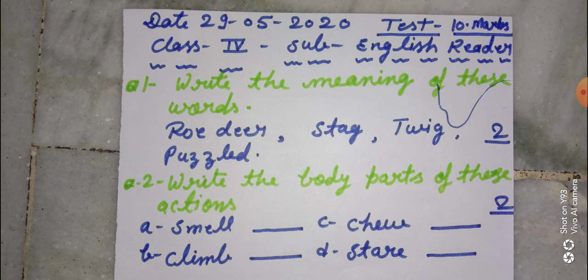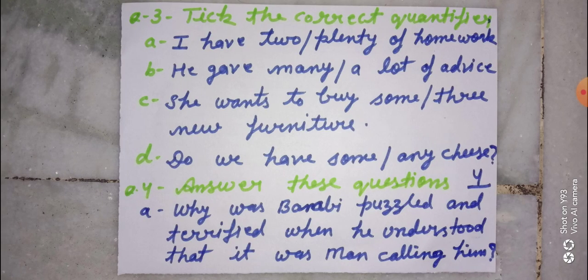Question number three: Tick the correct quantifier. Is mein aapko correct answer pe tick karna hai. A: I have two or plenty of homework. B: He gave many or a lot of advice. C: She wants to buy some or three new furniture. D: Do we have some or any cheese? First of all you will read these four sentences and after that you will tick the correct answer.